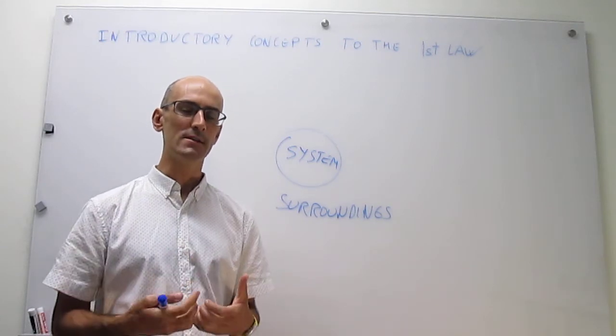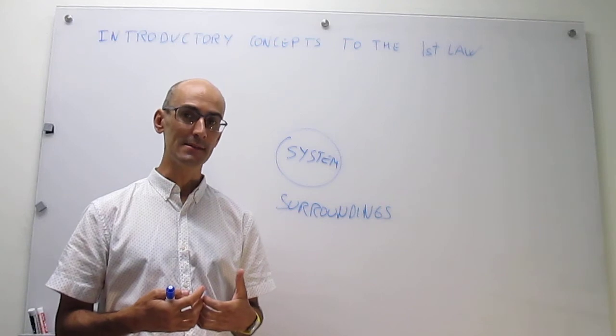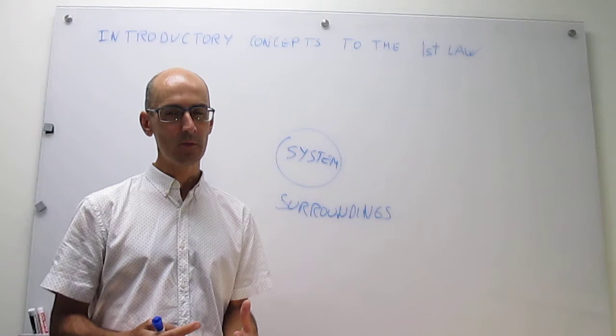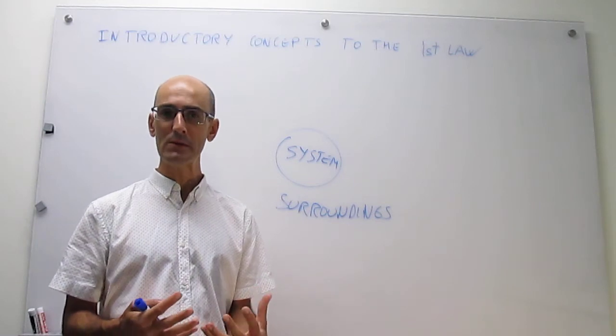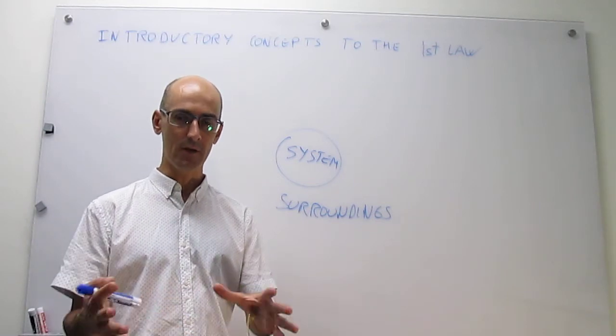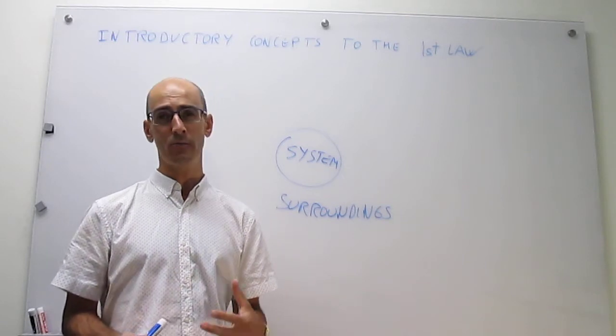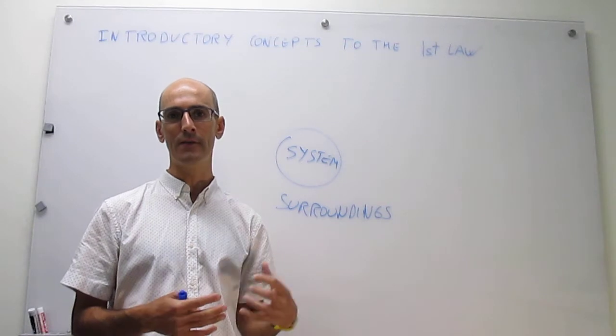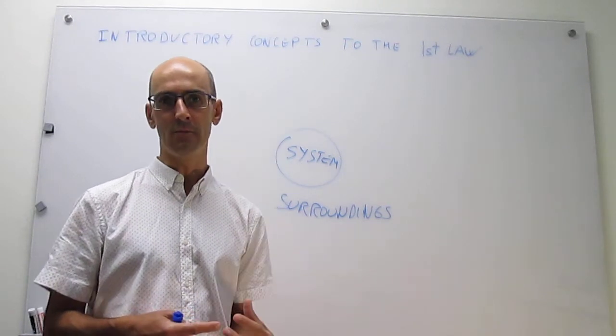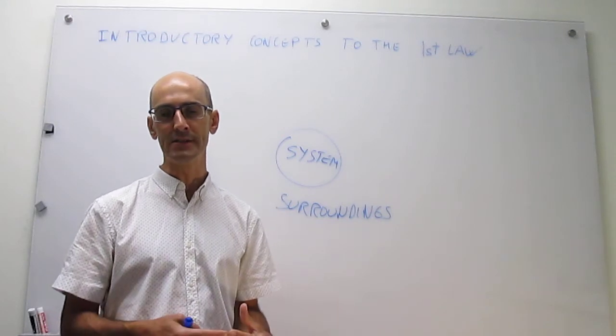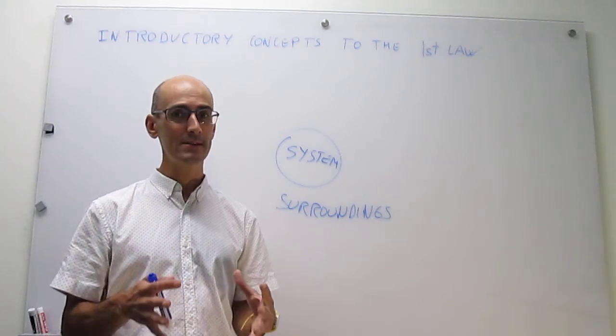That's what we want to understand in the life sciences. Now, the surroundings would be the rest of the universe. So notice that for most of the studies that we're going to be looking at, most of the systems that we're going to be looking at are going to be fairly small. We're going to have maybe 20 grams of water, or maybe we're going to have a mitochondrion, or maybe 20 milliliters of water, or something like that. That's the system.